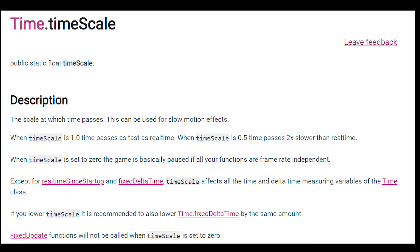Time.timeScale is a float value from zero to one. If it's at one, then everything is real time. However, if it's at zero, then nothing is moving. Physics also uses Time.deltaTime in order to move consistently. So we're going to be using Time.timeScale set to zero, meaning anything using Time.deltaTime or relying on physics, such as the FixedUpdate function, will be basically paused.